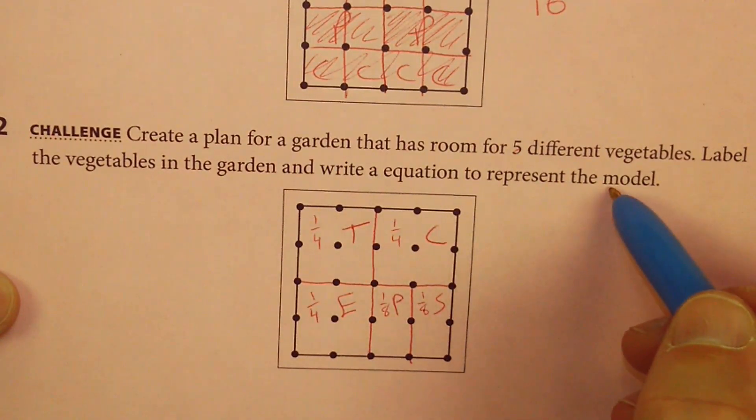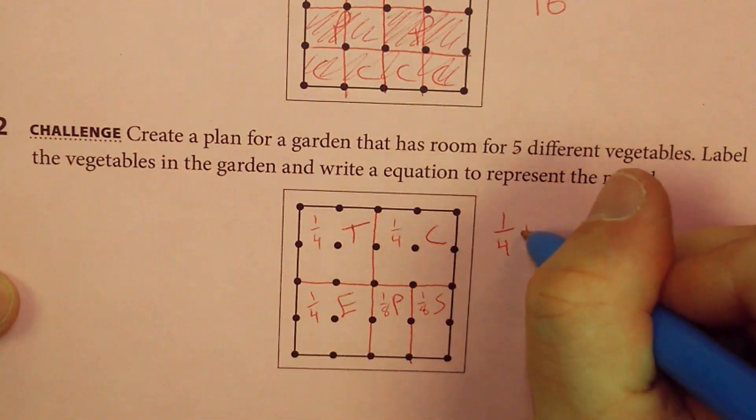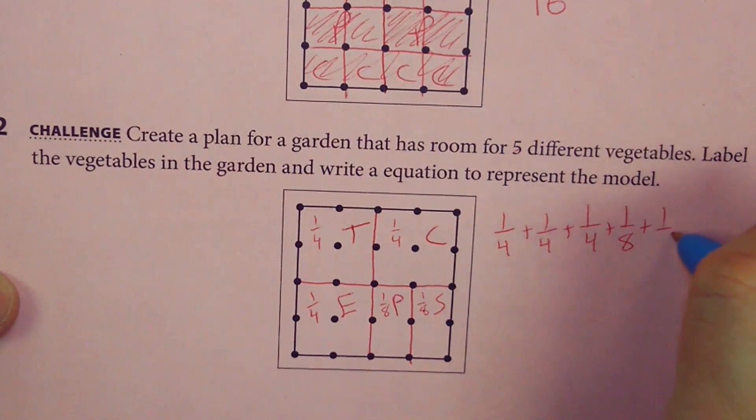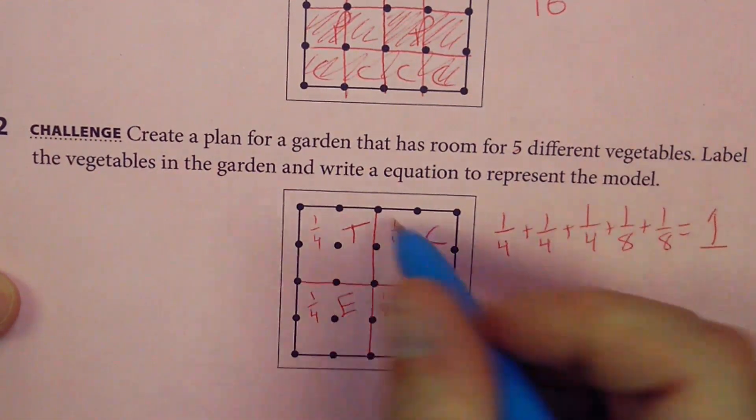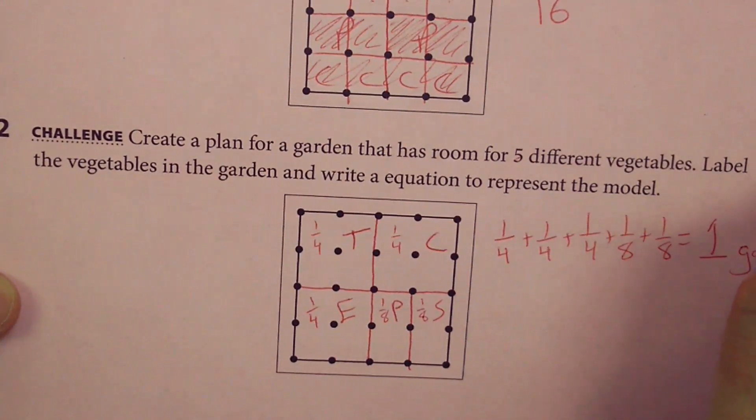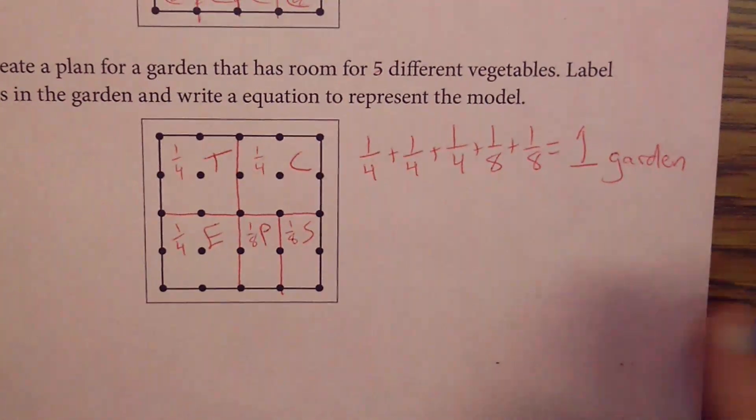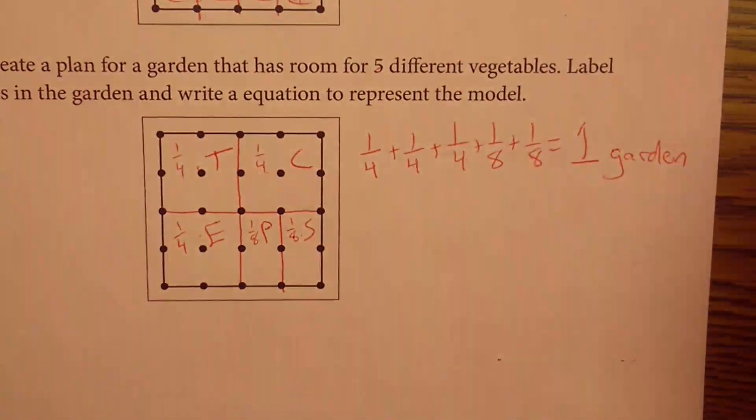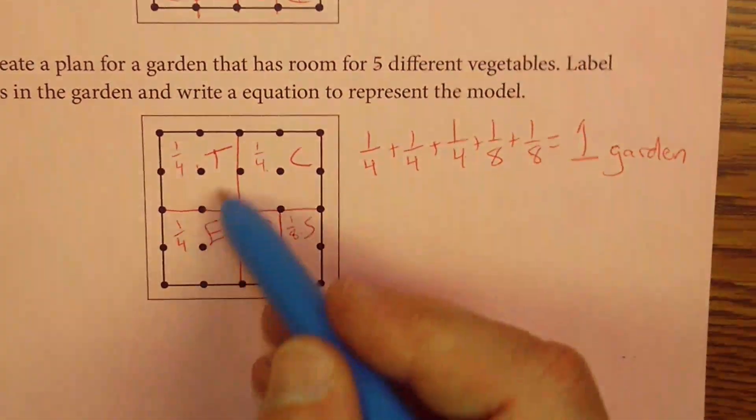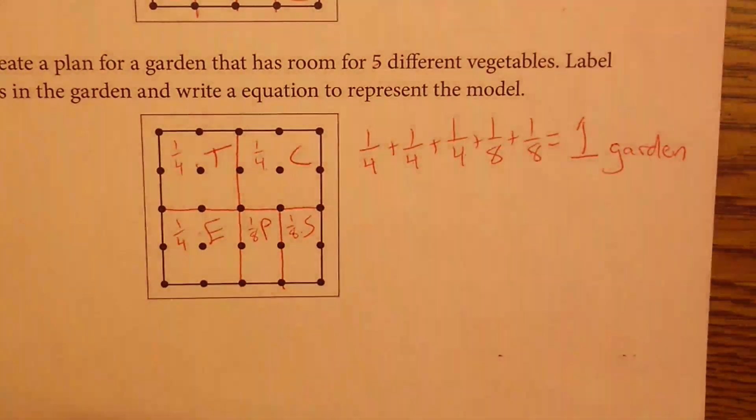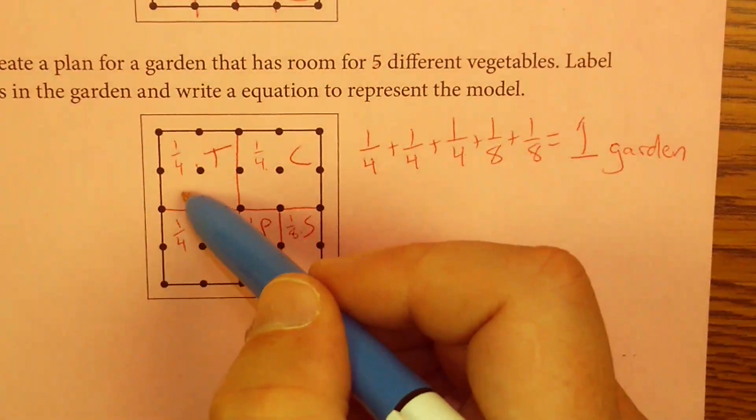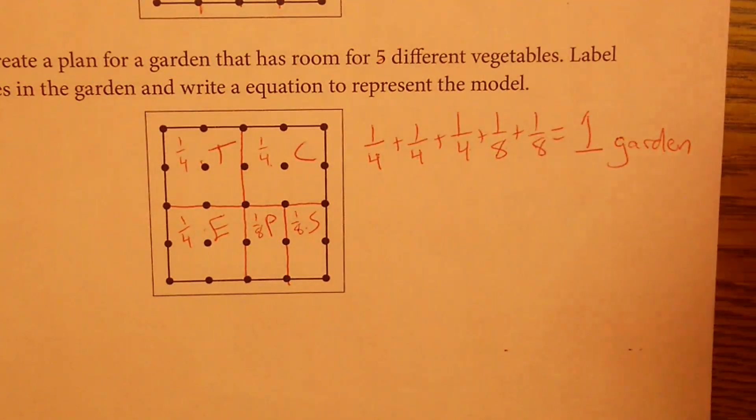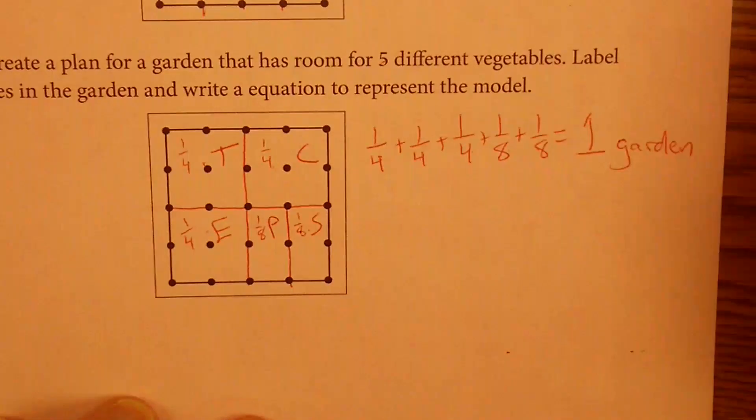My equation that represents this model would be one-fourth plus one-fourth plus one-eighth plus one-eighth equals one, because this is my one garden. Can you see where I'm writing over there? Oops, I'm a little off the screen. So if I add up all five sections, one, two, three, four, five, my five fractions, that should get me one garden. And you can split this up however you'd like. This happens to be the way that made sense to me. But you could do a half of something and then split up the other half into four different sections. The sky is the limit. It is up to you. I'd be curious to see what you end up coming up with.